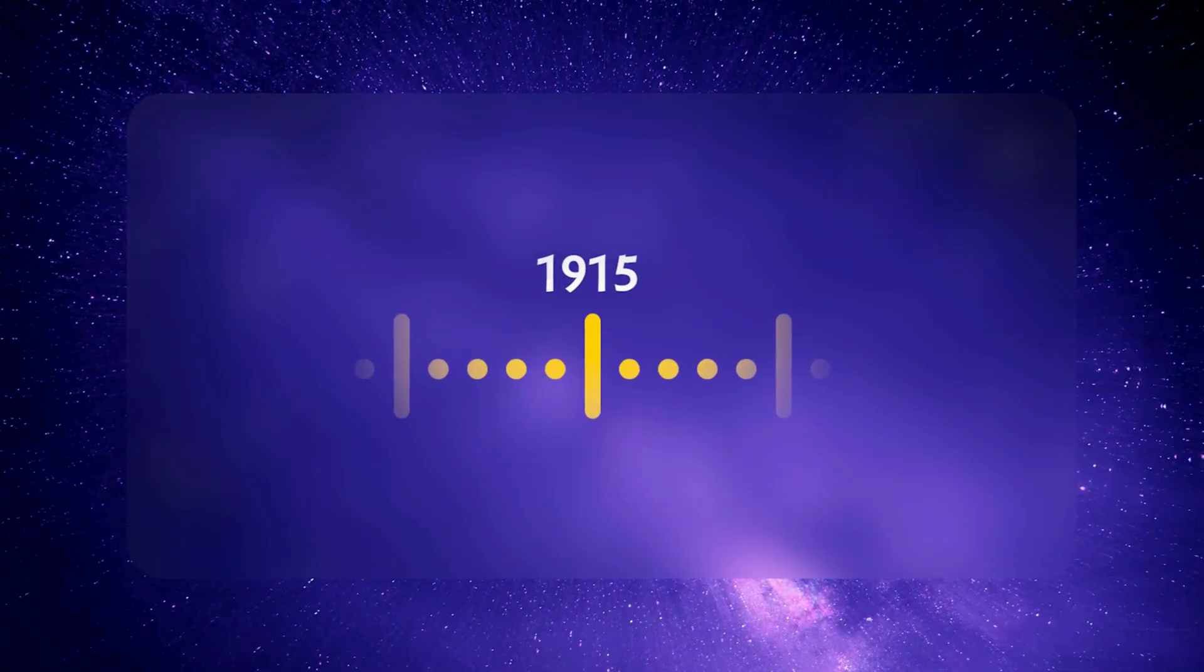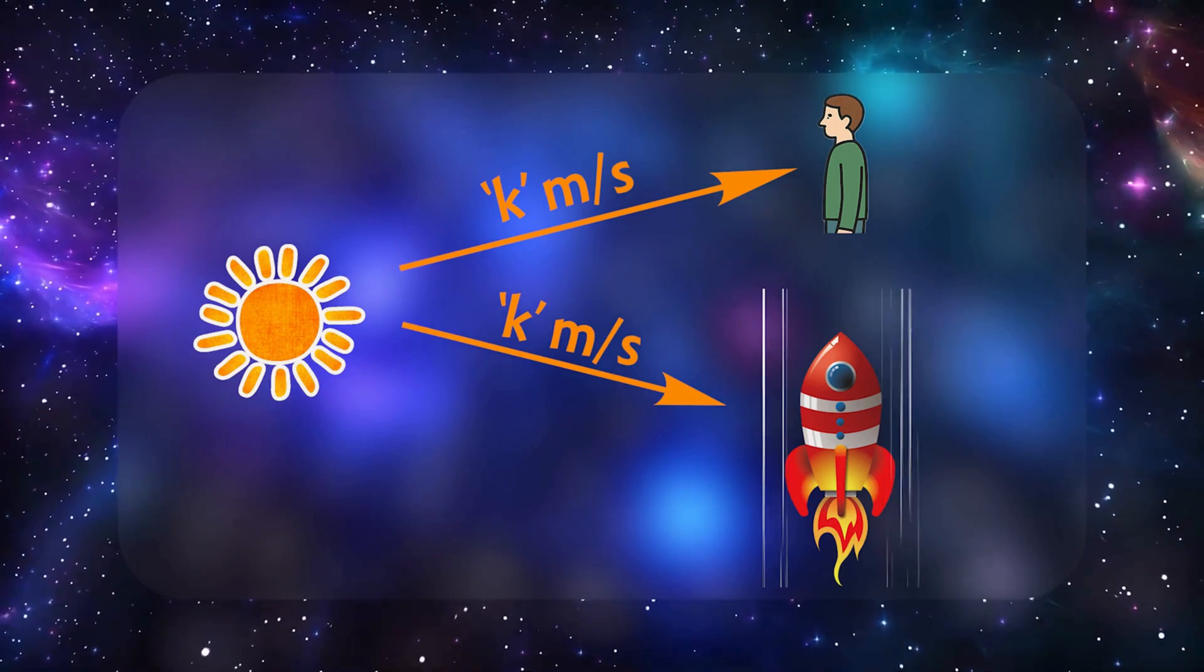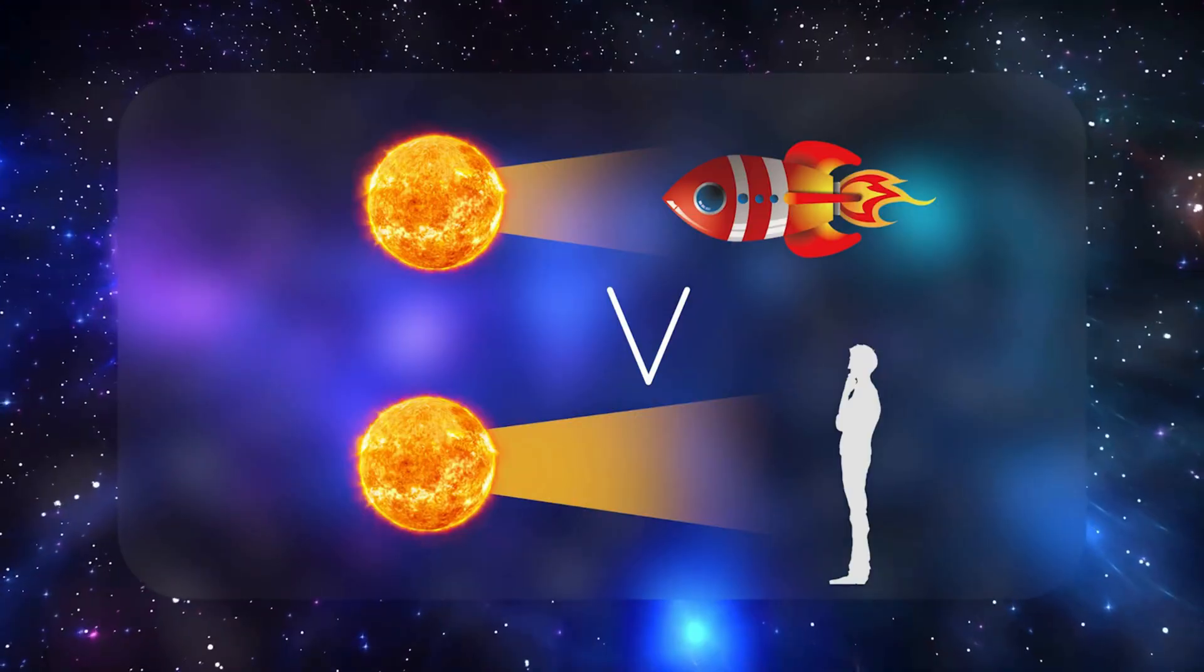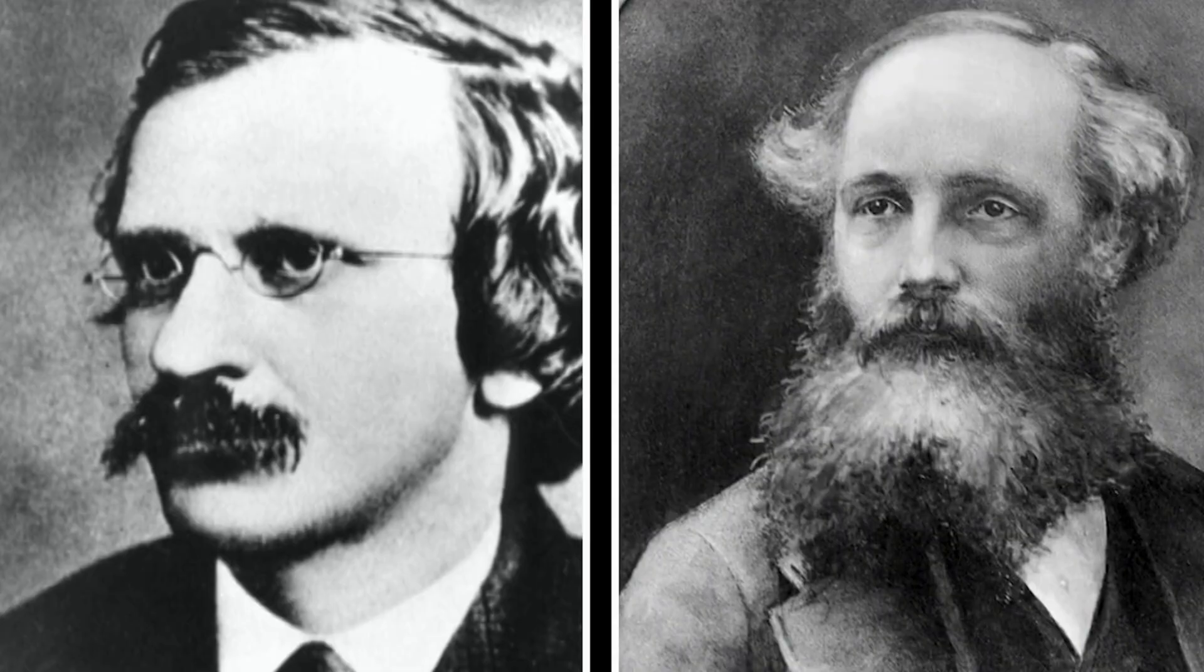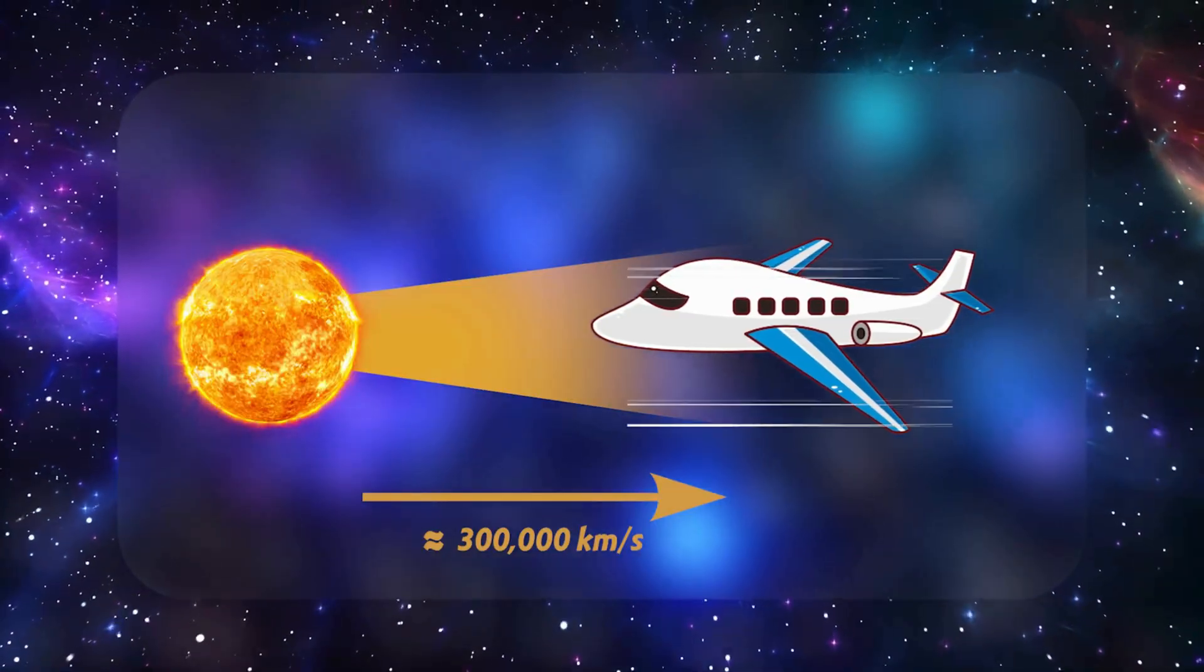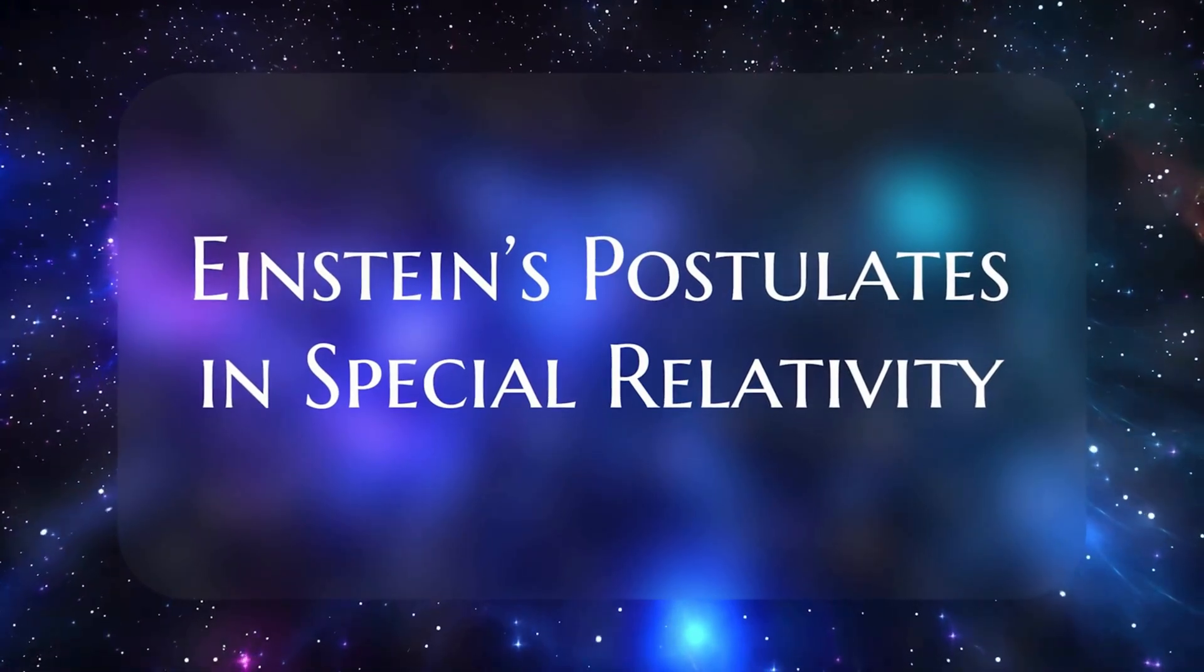Before we can tackle Einstein's grand view of gravity, we have to rewind a few years to the groundwork he laid in 1905 with special relativity. Because that's where the concept of spacetime was first crystallized. In the late 19th century, physicists wrestled with electromagnetism and the perplexing discovery that light's speed was constant for all observers, no matter how fast they were moving. Picture yourself in a spaceship racing toward a beam of light. You might expect that light would approach you faster than if you were standing still. Yet experiments such as the Michelson-Morley ether experiment and Maxwell's equations revealed that no matter what you do, light still blazes along at about 300,000 kilometers per second. No more, no less.